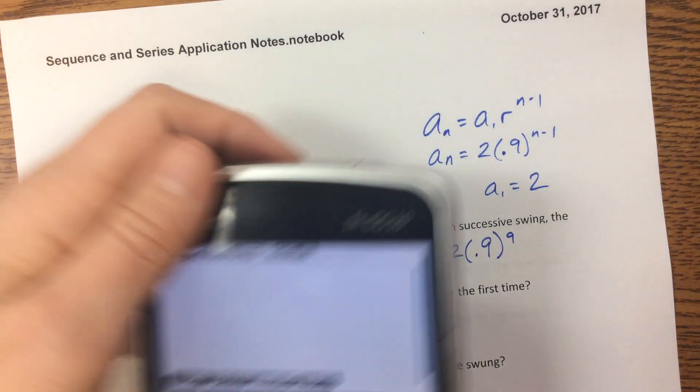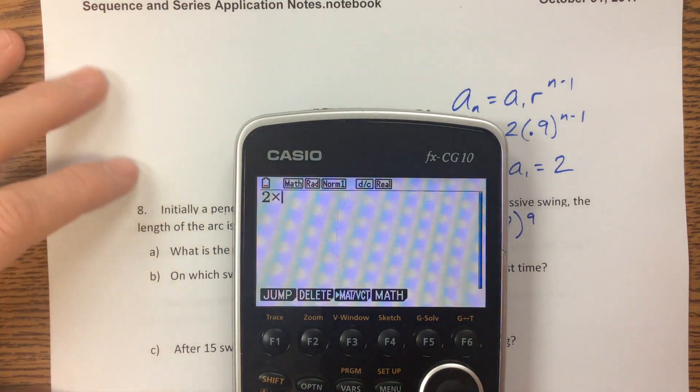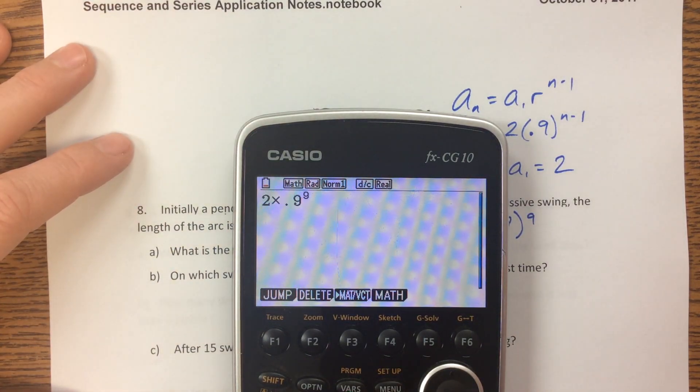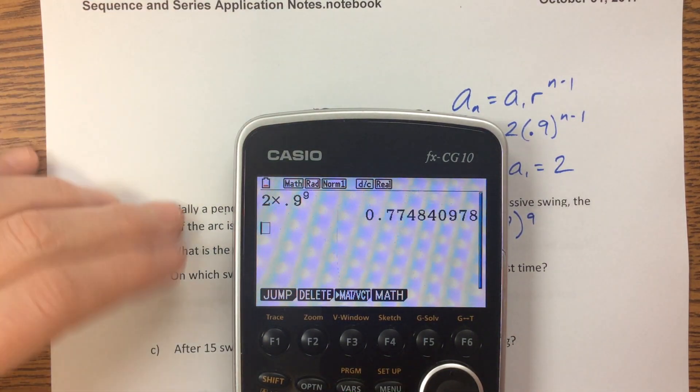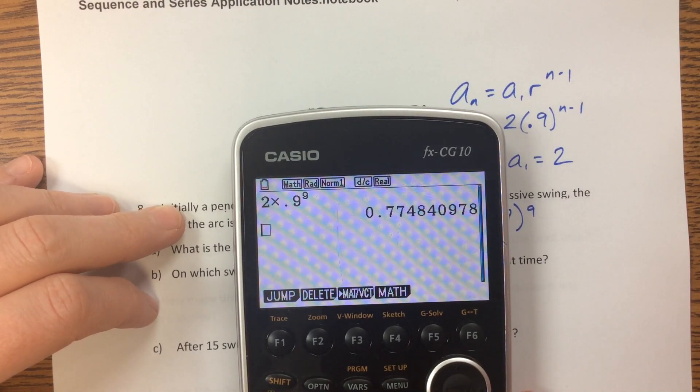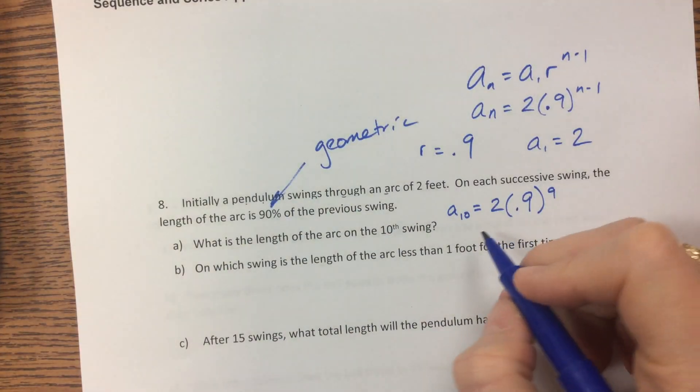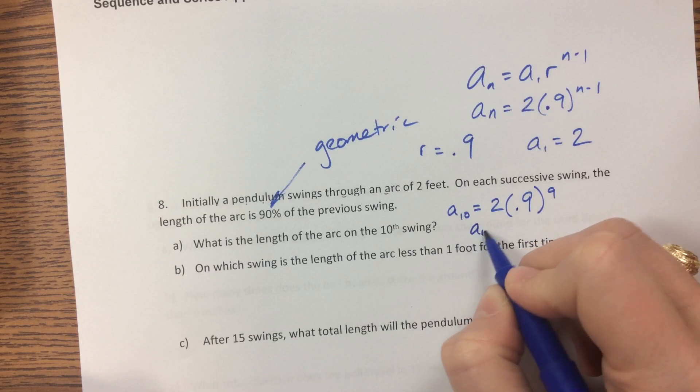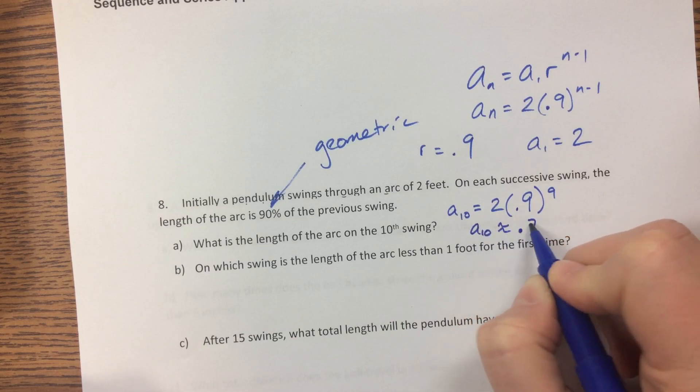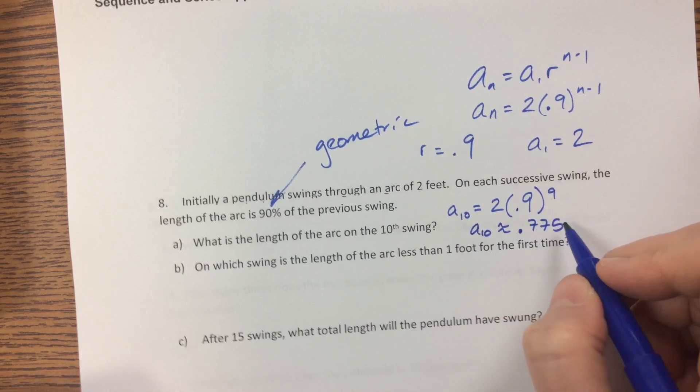So when I grab my calculator, 2 times 0.9 raised to the ninth power, and I get that it's about 0.775. We'll round to three decimal places. So a sub 10 is about 0.775 feet.